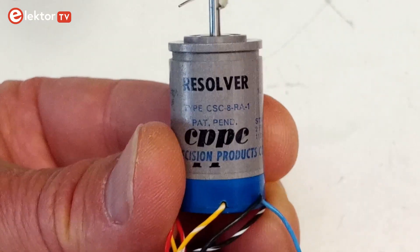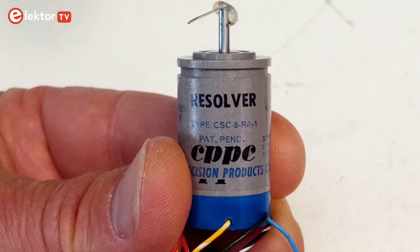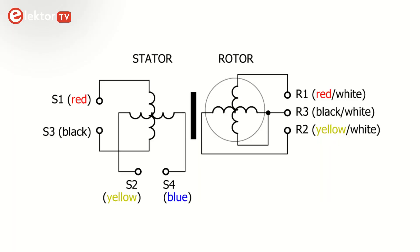My resolver has two windings on both the rotor and the stator, making it an almost symmetrical device. Almost, because the rotor windings are connected in series, limiting the rotor connections to three wires. The stator windings are independent of each other. Also, the stator and rotor resistances are not the same.